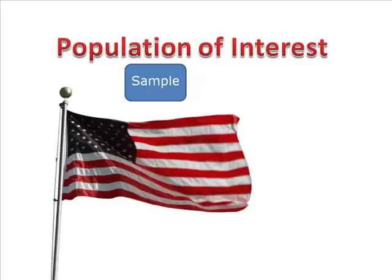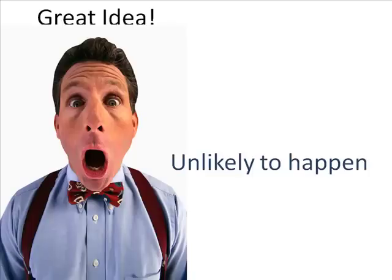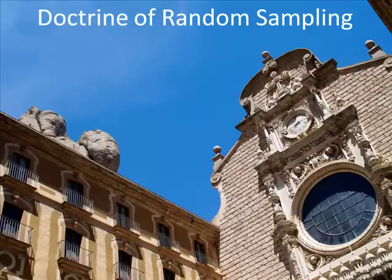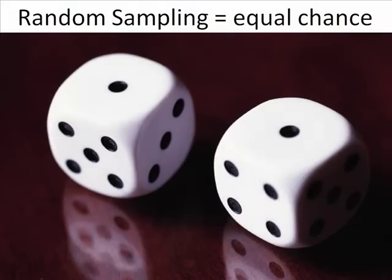In order to get an unbiased sample, you want to randomly sample this population. The doctrine of random sampling says the proper way to study a group is to give everyone in that group an equal chance of being selected. And it is important because the statistics you'll use to analyze the data are based on the assumption that you used random sampling.